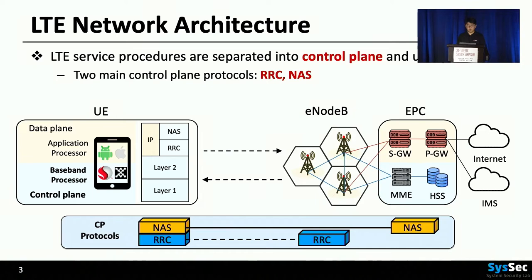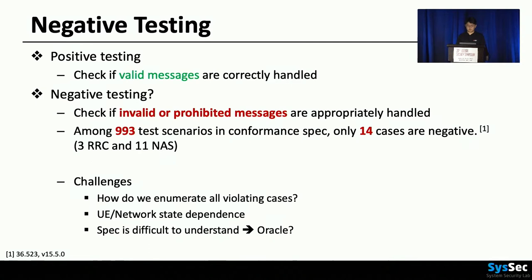There are two main protocols in the control plane: RRC, which is for communication with eNodeB, and NAS, which is for communication with EPC. The Cellular Standard Organization, 3GPP, has a testing standard called conformance specification. Unfortunately, it mostly deals with positive test cases — in other words, it checks if valid messages are correctly handled. What about negative test cases — checking if invalid or prohibited messages are properly handled? The conformance spec contains only 14 negative testing cases out of 993 test scenarios.